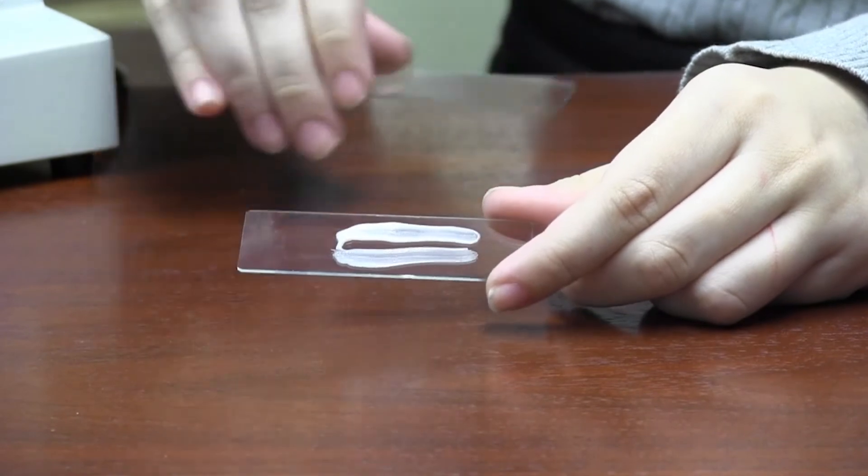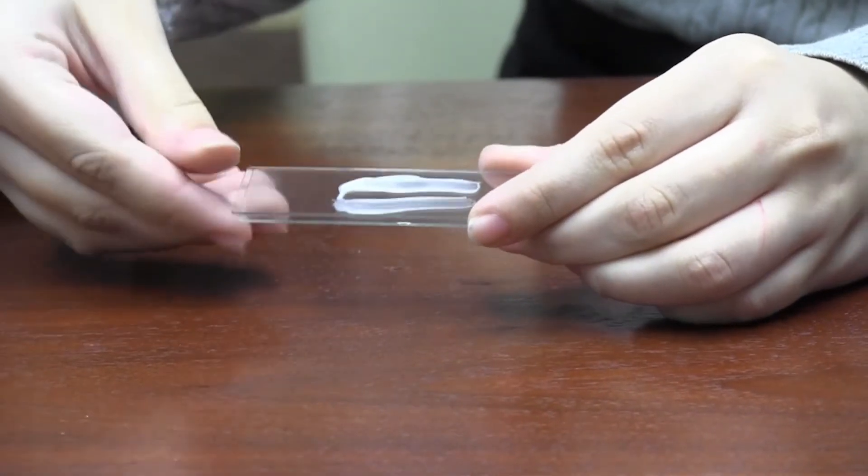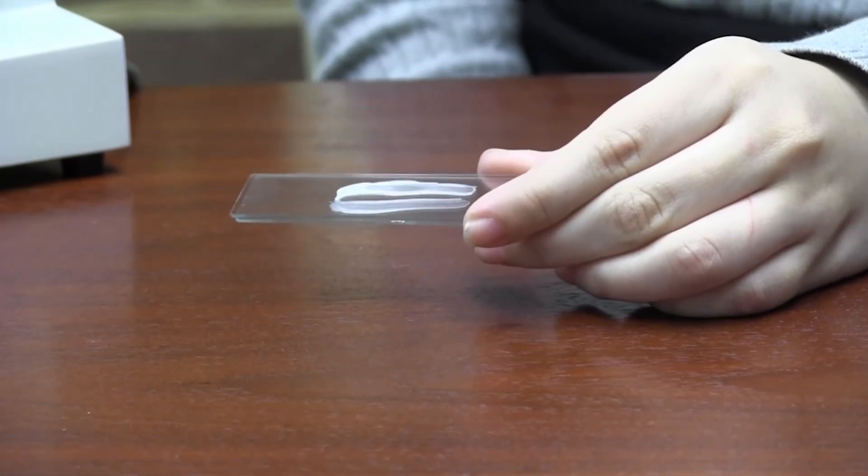When you are finished, place a cover slip or second slide over the area of the slide you touched with the swab. Handle this by the edges to avoid fingerprints here as well.